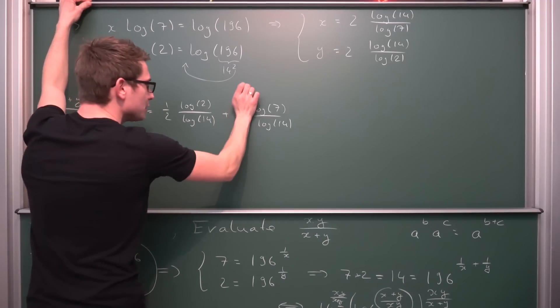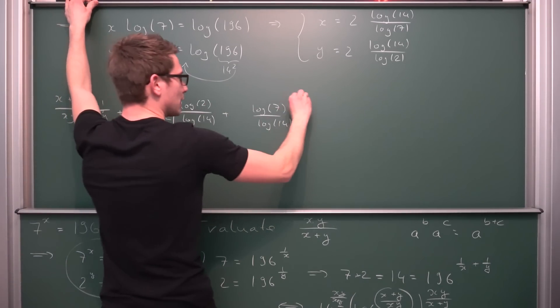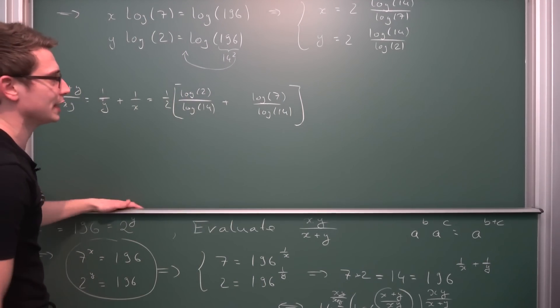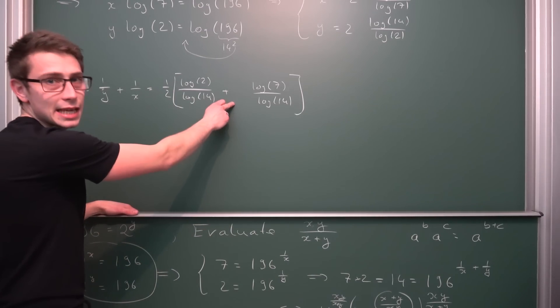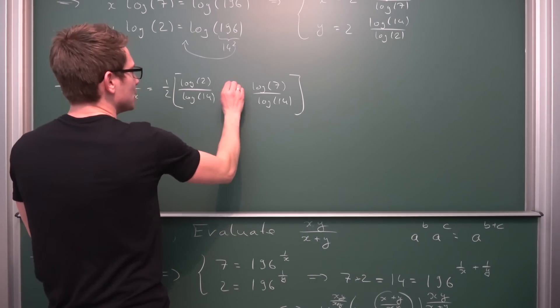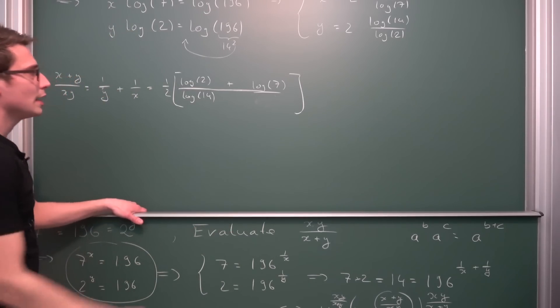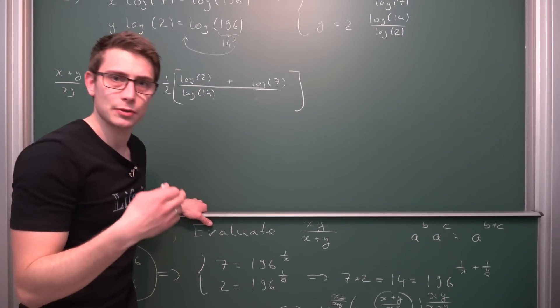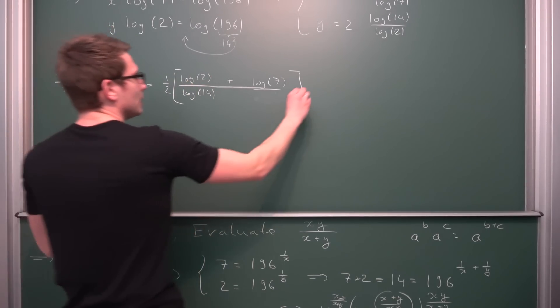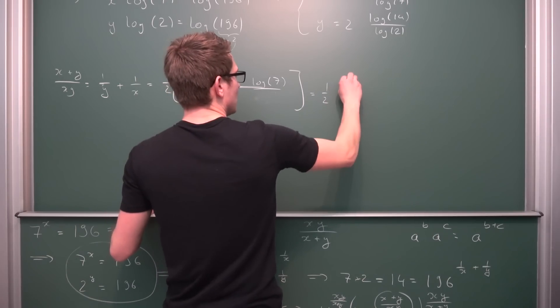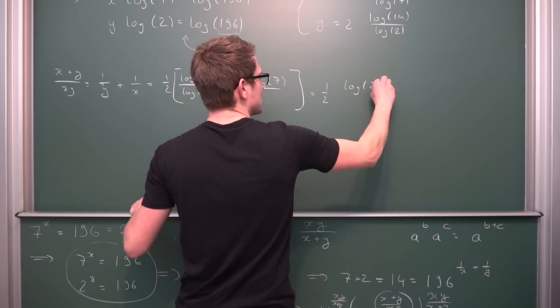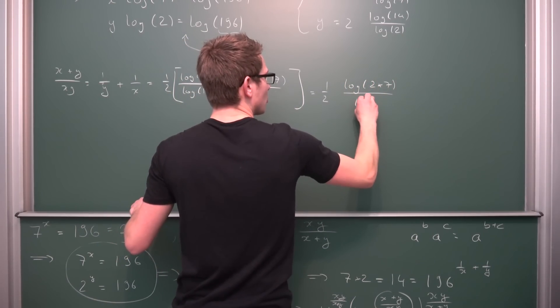Now we can factor out the one half here. This is something that we can do, using the distributive property and the real numbers. And also we have the same denominator now, meaning we can just add the numerators together. And log of 2 plus log of 7 by using the logarithmic properties is going to give us just the log of 2 times 7 divided by the log of 14.